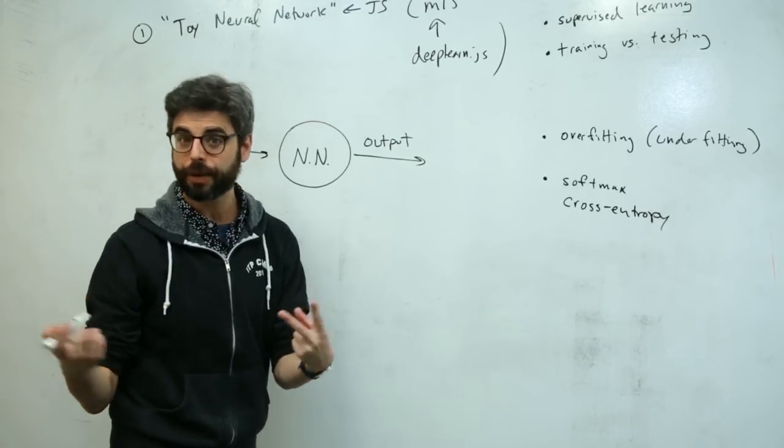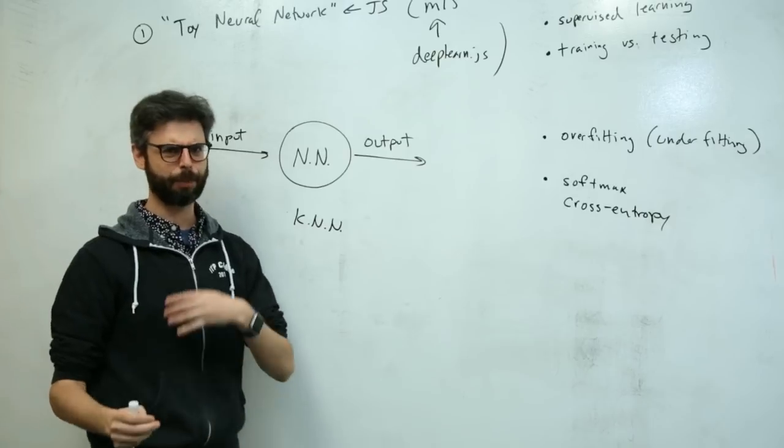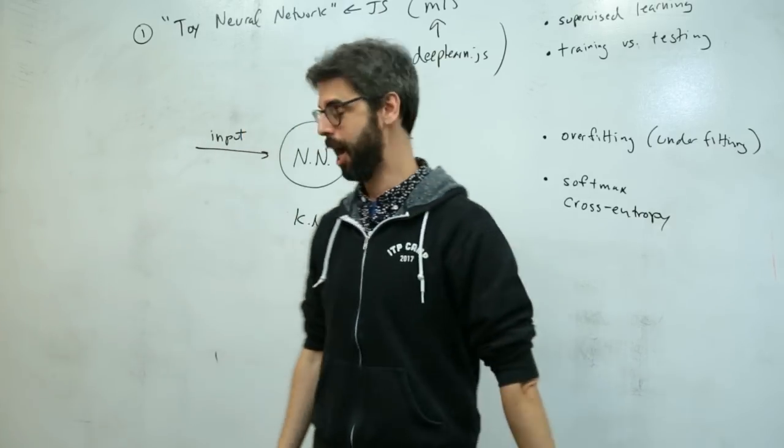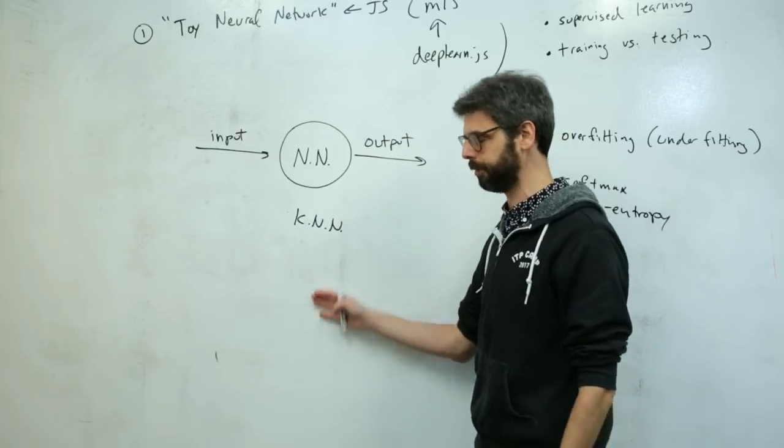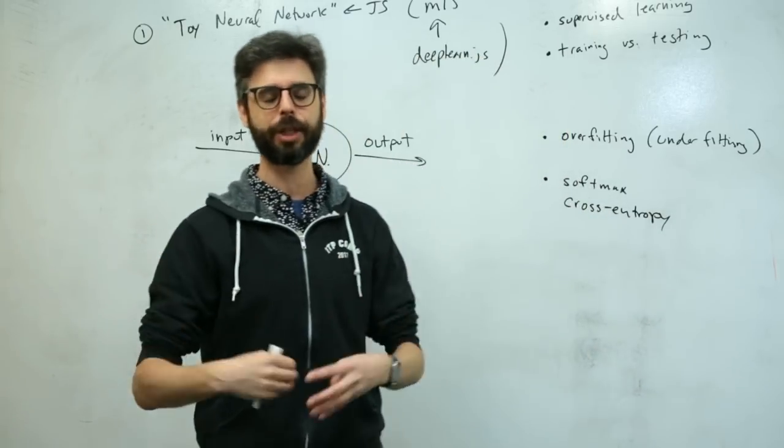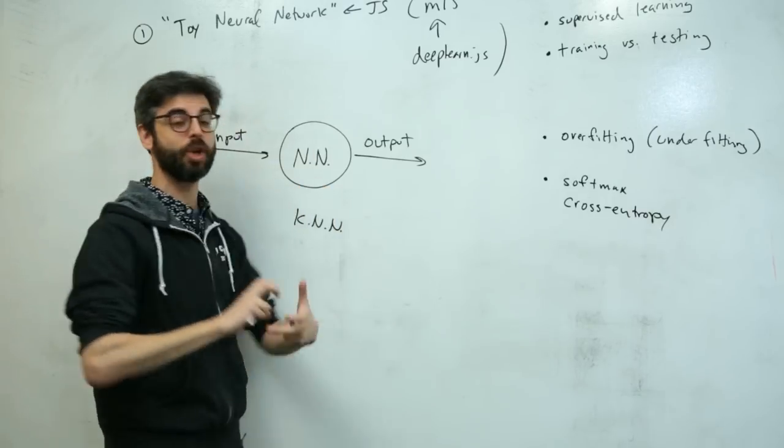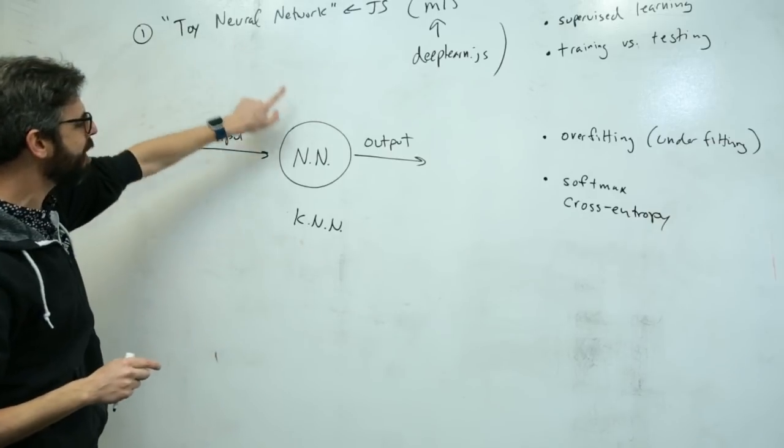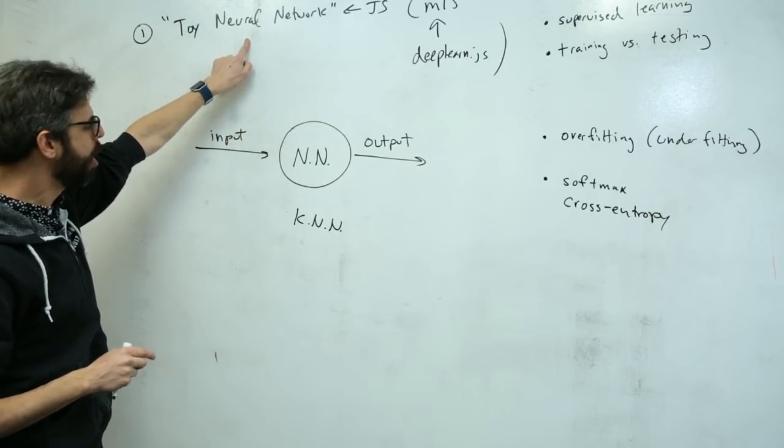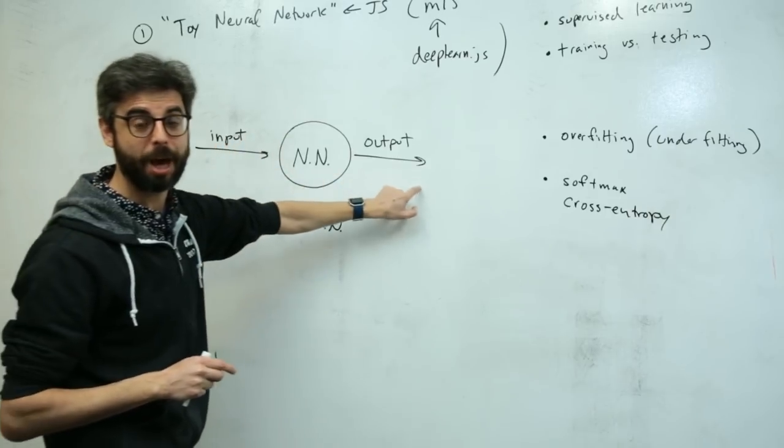You might have seen other videos that I've done about k-nearest neighbor. There's things like support vector machines, decision trees. There are lots of other machine learning algorithms for this case, for this learning process. That's what's sitting in here. So what I need, if I have that already from my library, what I need is to figure out what are my inputs and what are my outputs.